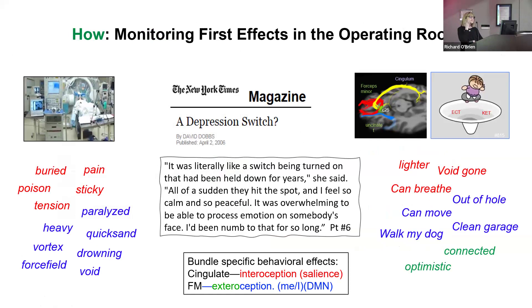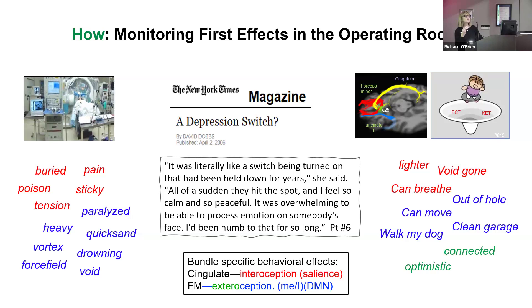We went back to the phenomenology people described in the OR — what happens when you hit the switch? I could always tell when they were going to say something: an opening of the eyes, a relaxation around the eyes. They would say things like 'I feel lighter,' 'the void,' 'I'm out of a hole,' 'I want to walk my dog.' Out of the attractor, immediately. Pain is gone. I can move. We also found you can get an autonomic response — a skin conductance response bigger on the left than the right, specifically when you hit the cingulate. And Peter Strick's work in monkeys shows the cingulate projects to the adrenal gland, to the stress system, to the body.